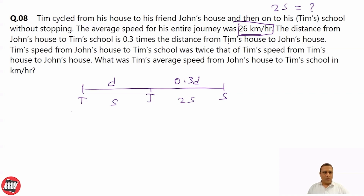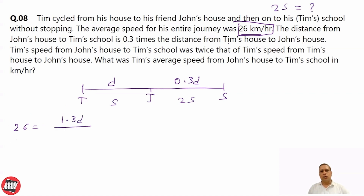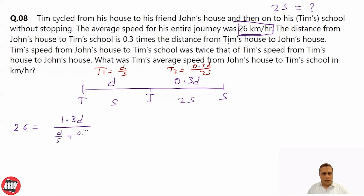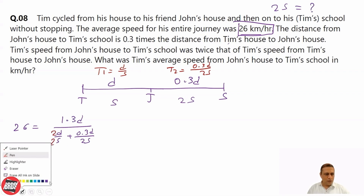Average speed equals total distance, which is D plus 0.3D = 1.3D, divided by total time. Time is distance over speed, so T1 = D/S and T2 = 0.3D / 2S. Total time is D/S + 0.3D/2S. Making the denominator the same gives us 2D/2S + 0.3D/2S.